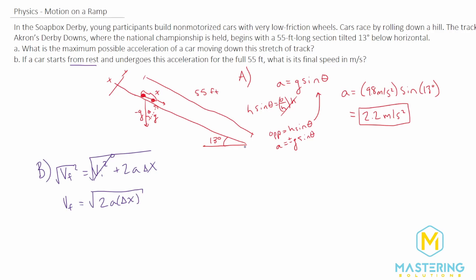Now before we plug in our numbers here, the problem is that the delta x is given in feet, and we need it in meters so that we'll get standard units out of the equation. So first we need to convert 55 feet to meters.